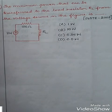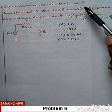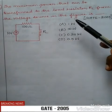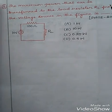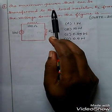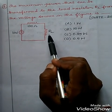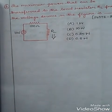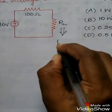Problem number 6. The problem is to find the maximum power transferred to the load resistor RL from the voltage source. This problem is related to the maximum power transfer theorem — to find the value of RL such that it receives maximum power, and to find the maximum power received by RL. If RL observes maximum power, then the value of RL will be equal to RS.